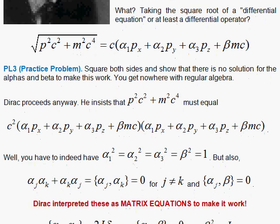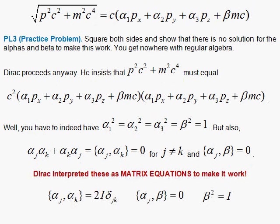So if we come down here to our conditions, this looks like a matrix kind of equation. Anti-commutator of 2 operators is twice the identity, and the Kronecker delta here. And these anti-commute.